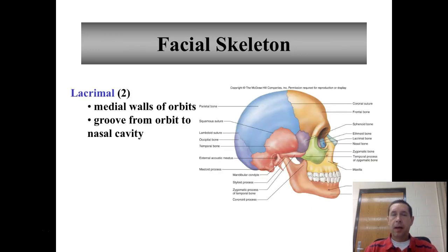The lacrimal bones are in the medial corner of the orbit. They form the medial wall of the orbit and have a groove where you find the lacrimal duct that drains the tears from the eye down into the nasal cavity.